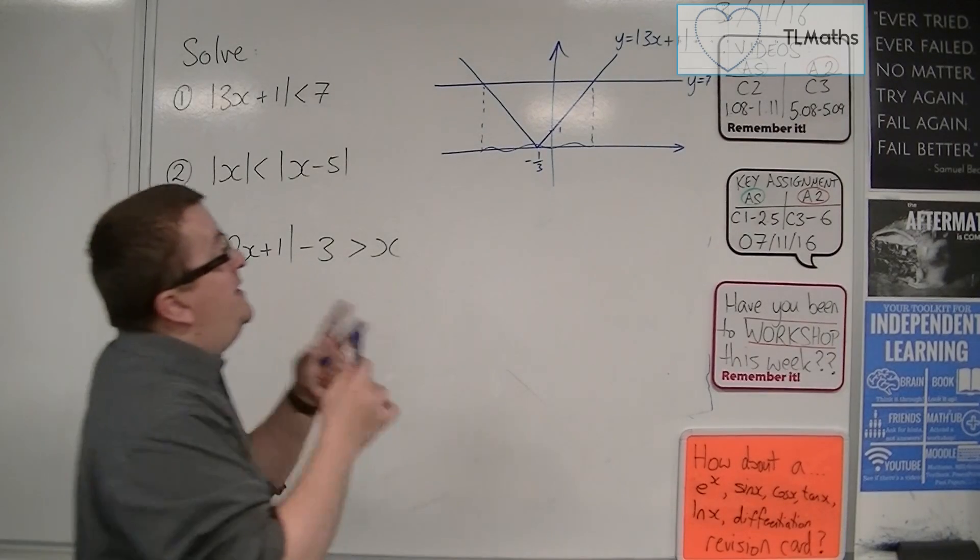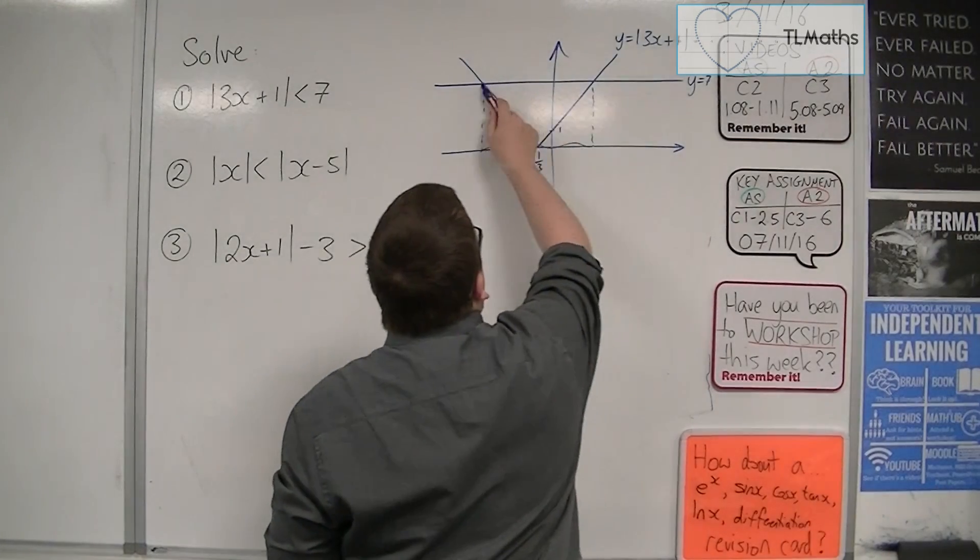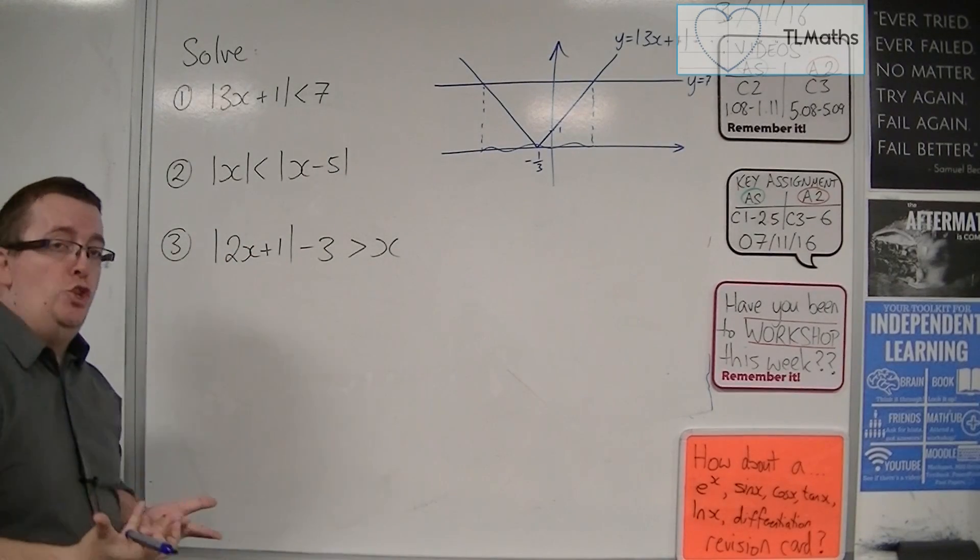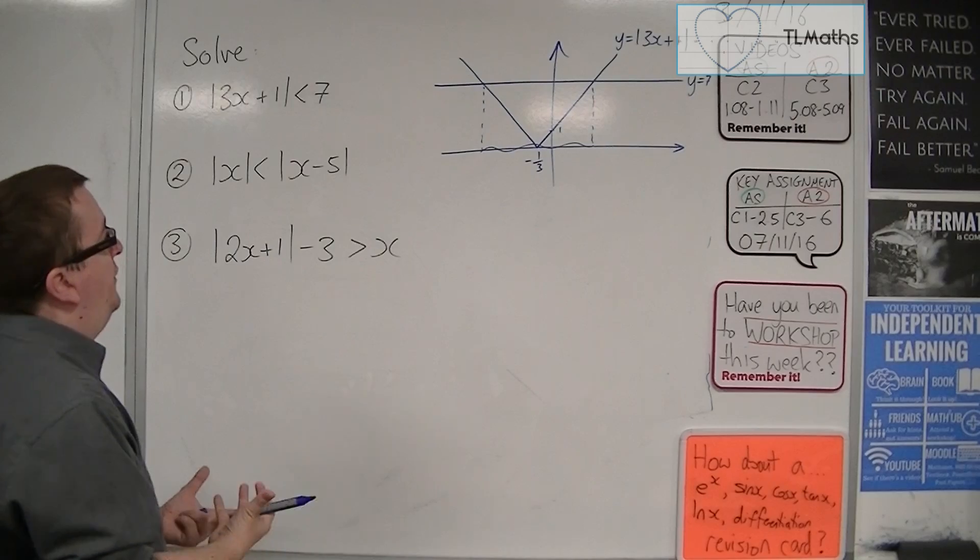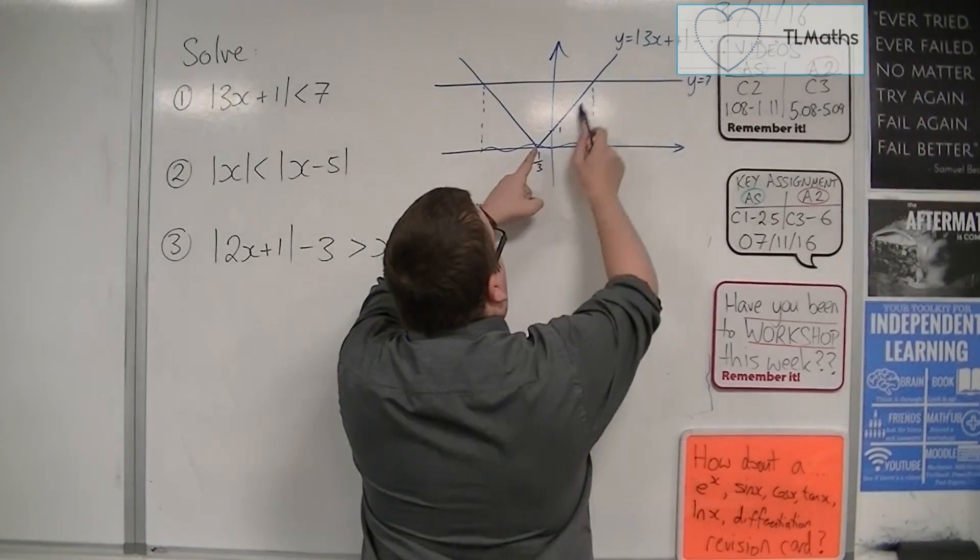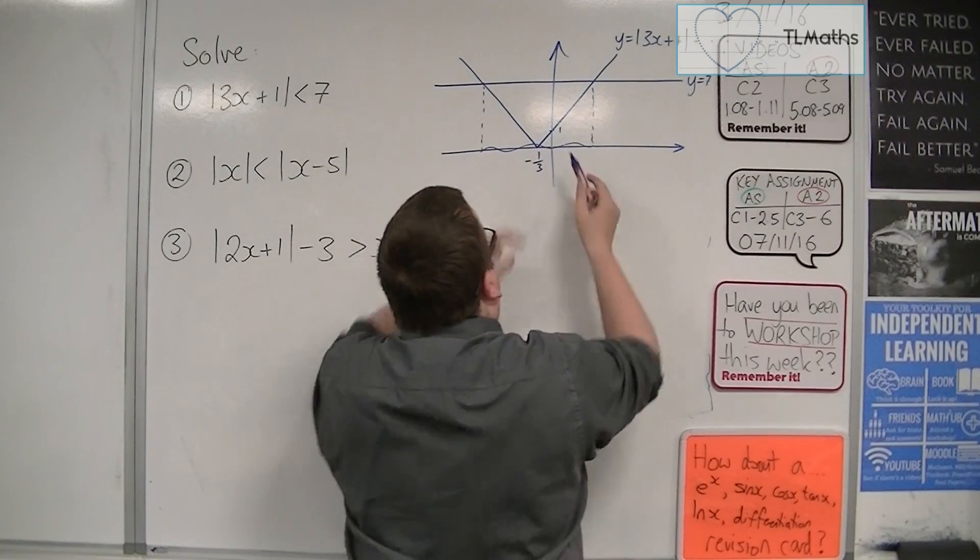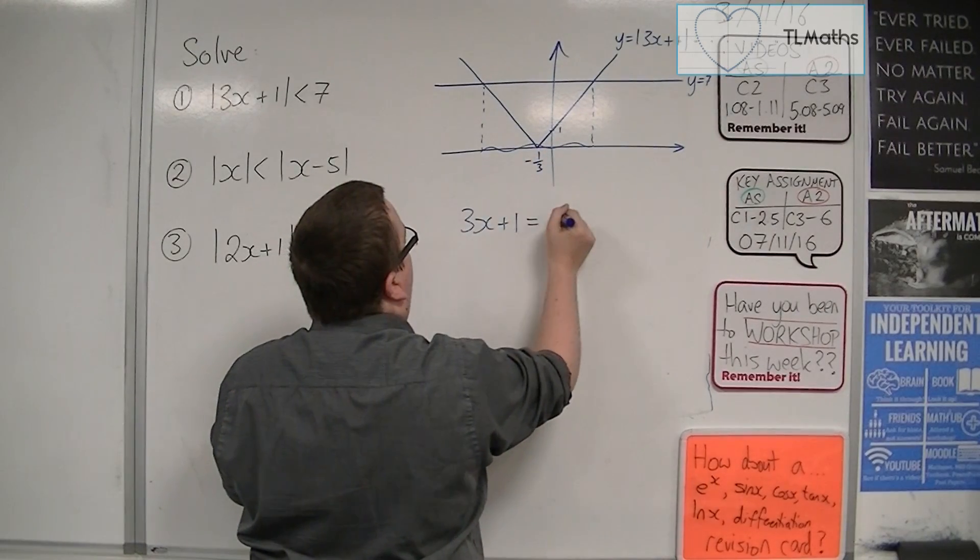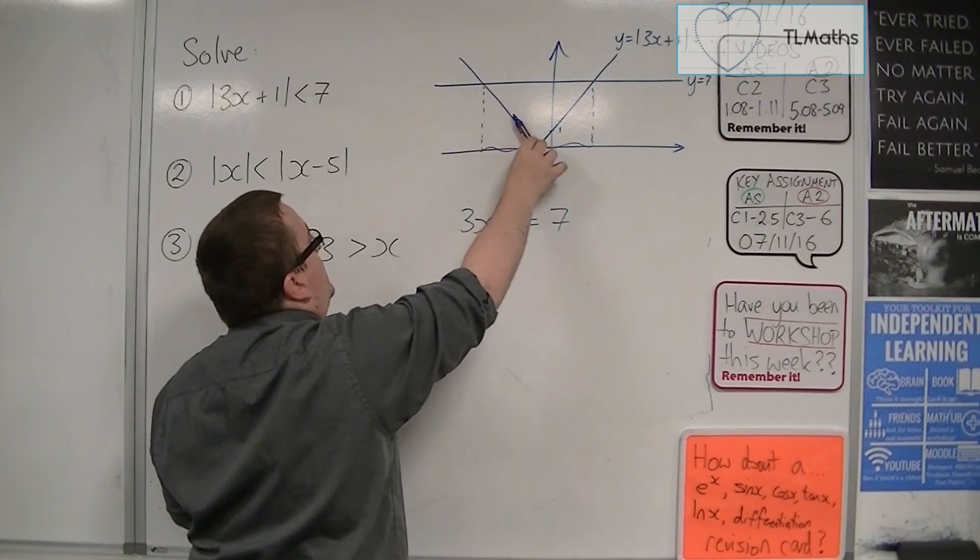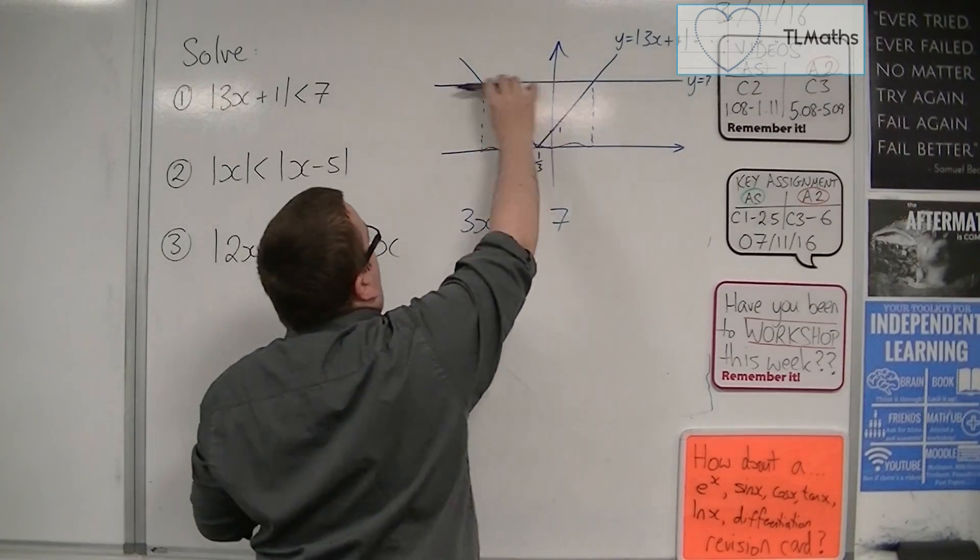In order to do that, I need to find these intersection points. So I need to turn this into a solving an equation problem for the second part. This line is the line 3x plus 1 and that's where it's crossing 7. So I can do 3x plus 1 equals 7. That line is minus 3x minus 1 and that's crossing 7.